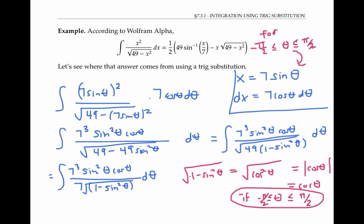This might seem like cheating, but it's actually legit. Because if you think about the unit circle, as theta ranges from negative pi over two to pi over two,